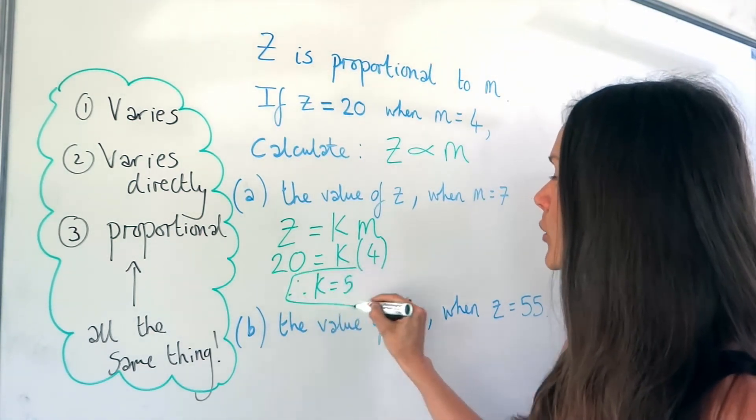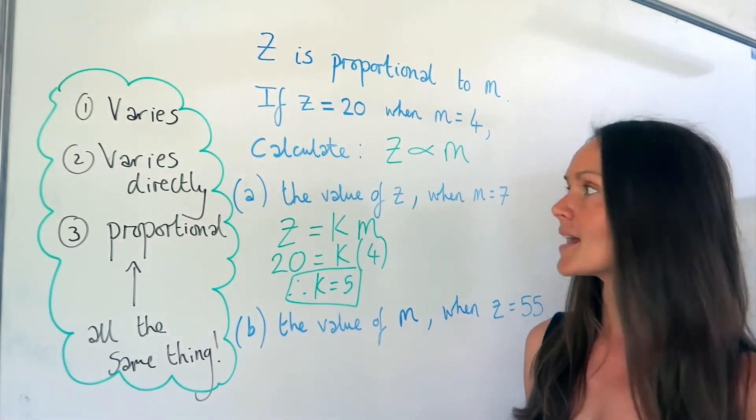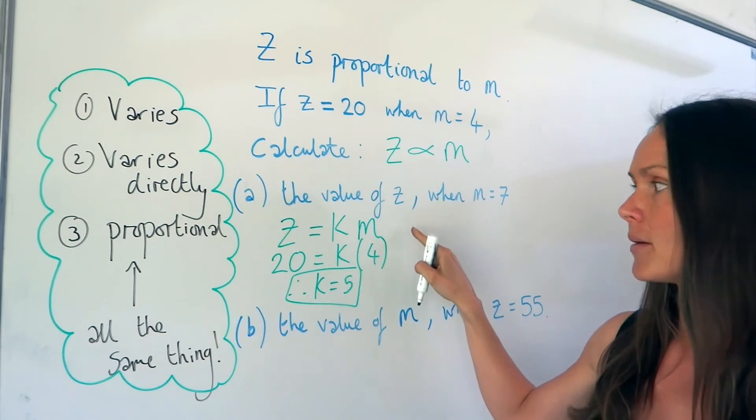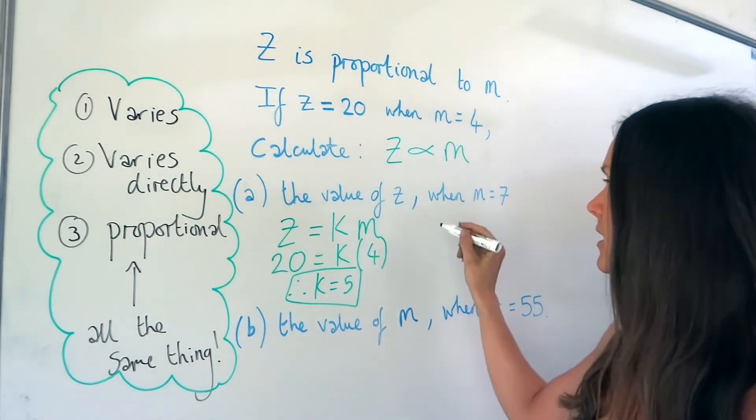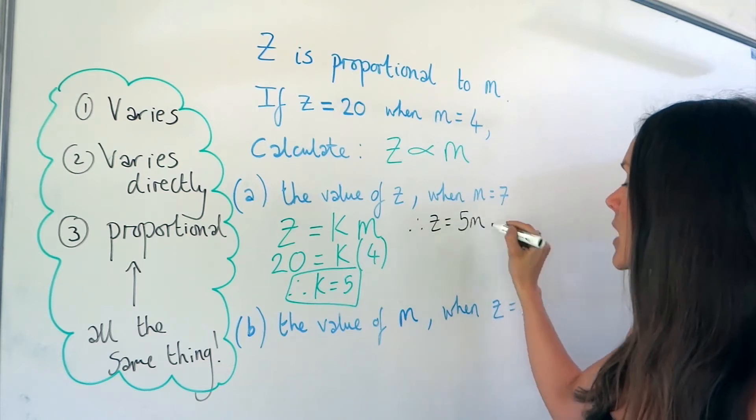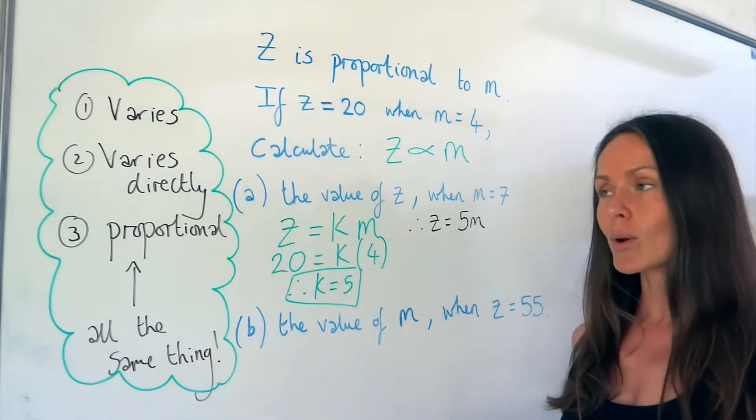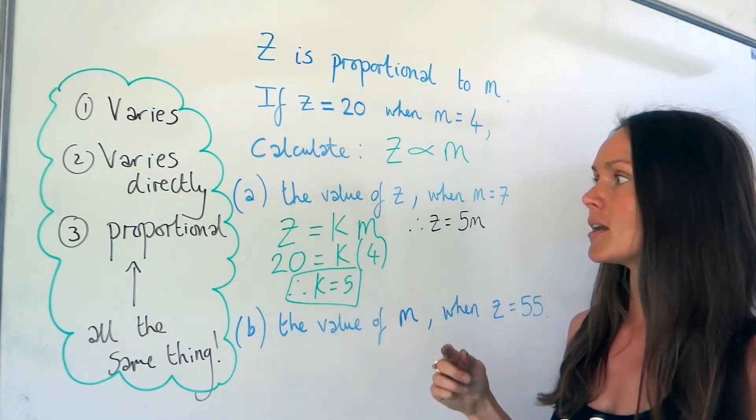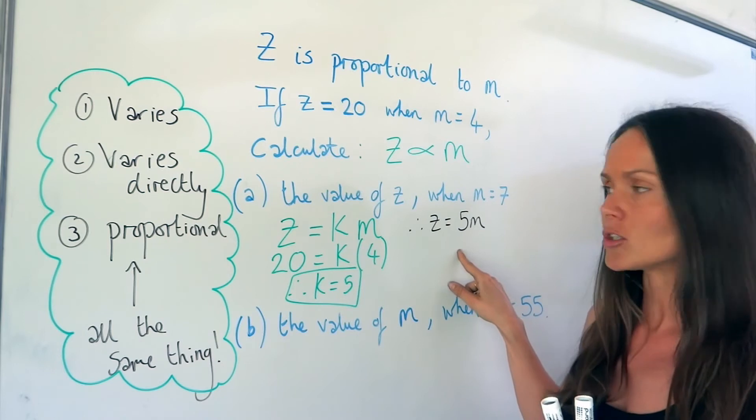So now I know the equation connecting z and m. Remember, the equation was z equals km. Well, now we know the value of k, I know my equation is z equals 5m. So I can use this equation throughout the question to answer parts a and b. So you won't be able to do parts a and b until you've found the equation here.